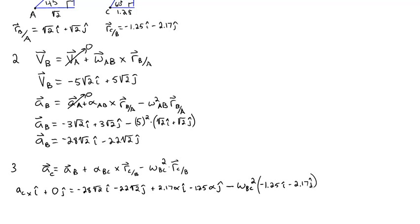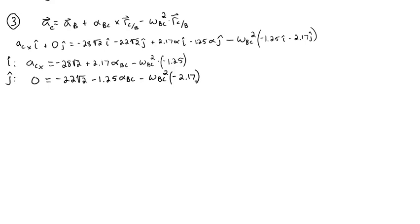Instead of looking at this ugly mess all in one, we're going to break it up into two equations, one in the I direction and one in the J direction. Now we have two equations with alpha_BC and omega_BC. Unfortunately, we need to find another relationship before we can solve for the acceleration of the coupling in the X direction.